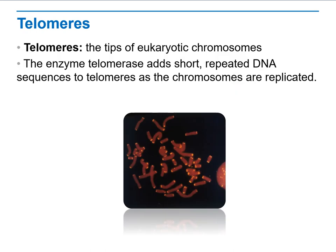One important concept to understand when discussing DNA is telomeres. Telomeres are the tips of eukaryote chromosomes, and we have an enzyme called telomerase. Telomerase adds short repeated DNA sequences to the telomeres as chromosomes are replicated.